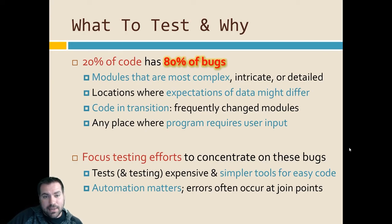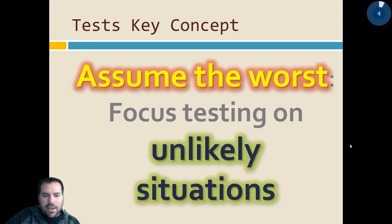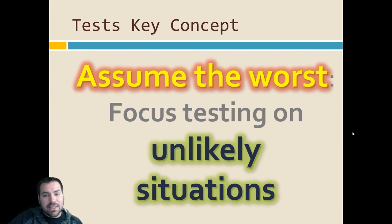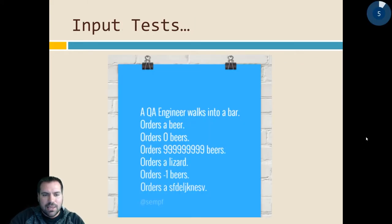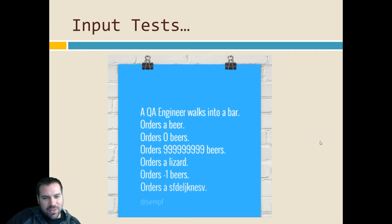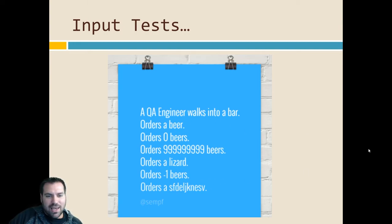You're always checking for worst-case situations. In algorithms you're always looking at worst case — big O notation, same theory applies here. What's the worst thing anybody can throw at my code? I need to test for that. We want to test even very unlikely things. Common meme: QA engineer walks into a bar, orders a whole bunch of stuff, and then the program crashes anyway because the first real customer who walks in asks where the bathroom is. QA engineer didn't think of that. Program crashes, done.